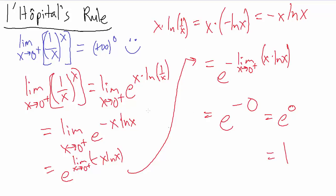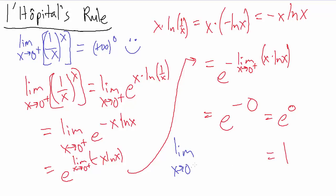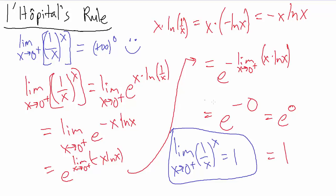If you haven't watched example 4, I refer you to that video for the details on evaluating that inner limit. The key trick here — used in example 5 as well — is writing the expression using e to the natural log of m equals m but applied in reverse. That's always the trick to use when you have a problem like this requiring L'Hôpital's rule. So the final answer is: the limit as x goes to 0 from the positive side of (1/x) to the x equals 1.